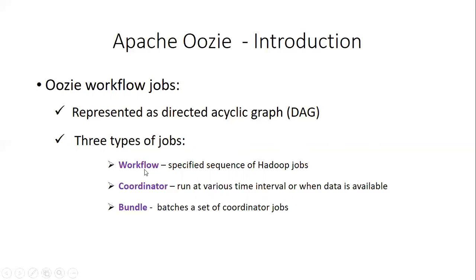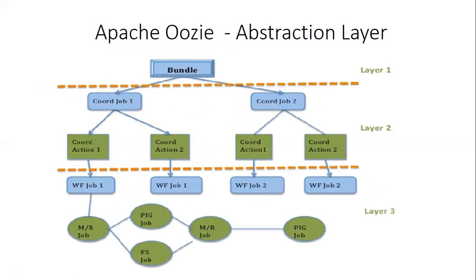Basically, there are three types of jobs permitted. One is workflow, the second is coordinator, and the third is bundle. Workflow is a specified sequence of Hadoop jobs with outcome-based decision points and control dependency — it shows in what sequence the job has to be executed to achieve the complex job. Coordinator means it will be running the scheduled workflow job at various time intervals or when data is available. Bundle is like a package which bundles a set of coordinator jobs. At the high level bundle is there, below that coordinator, and at the lower level the workflow.